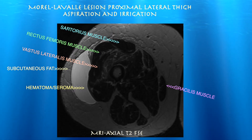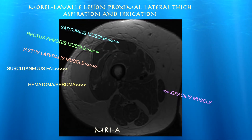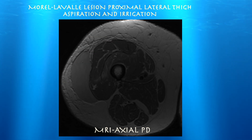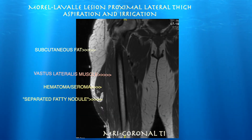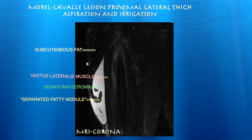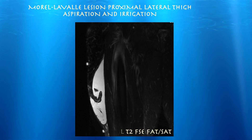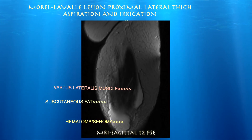Here's an axial MRI where you can see the muscle layers of sartorius, rectus femoris, vastus lateralis. Just lateral to the vastus lateralis, you have this very large degloving-type Morel-Lavallée lesion. Here's a fat-saturated coronal image where it just lights up, showing you how large this fluid collection is.